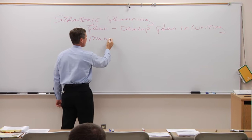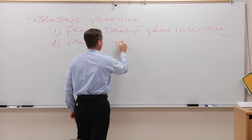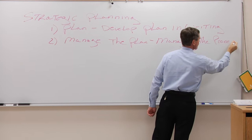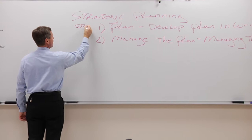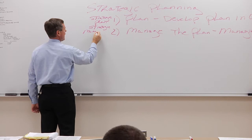The second piece is we have to manage that plan. Once we get the plan developed and we're ready to implement and execute the strategies towards mission fulfillment, we have to be able to manage the plan — what I like to call managing the process. So we develop the plan, and the implementation and execution of that strategic plan is what we call strategic management.